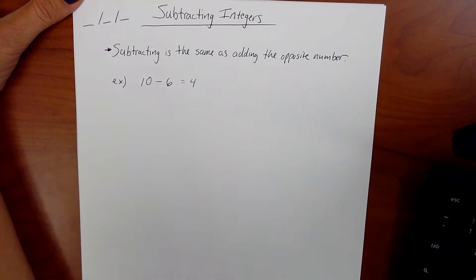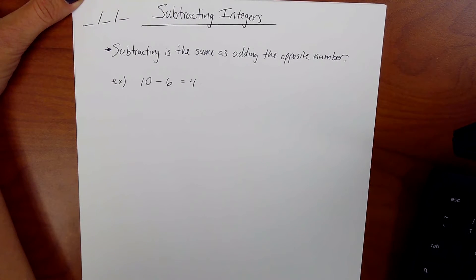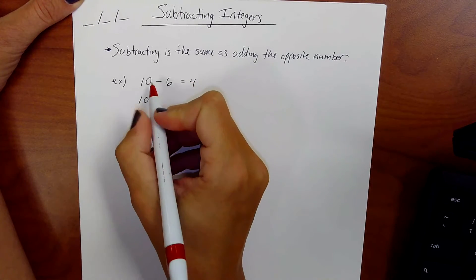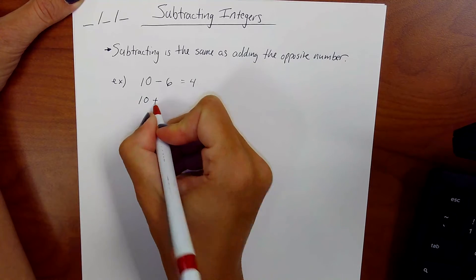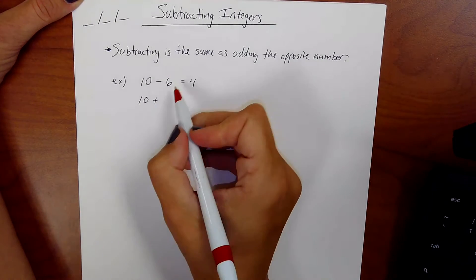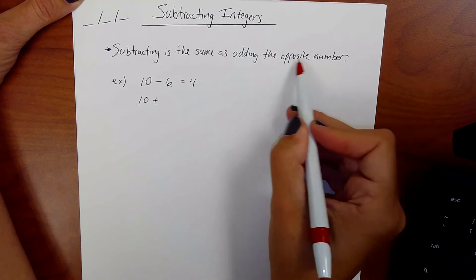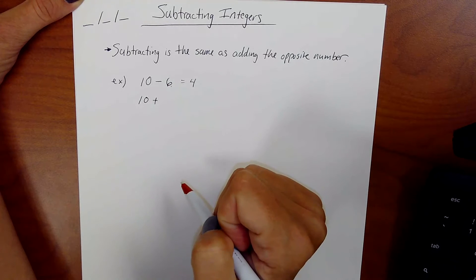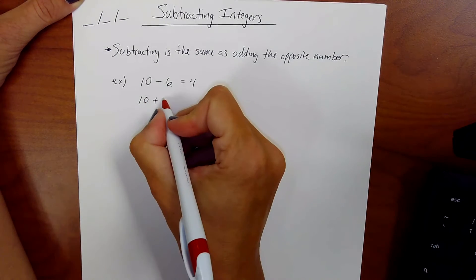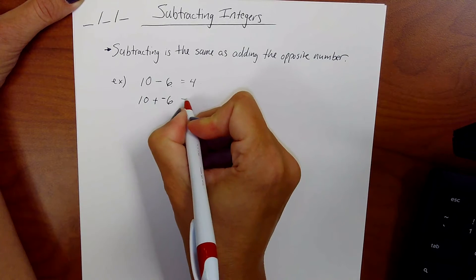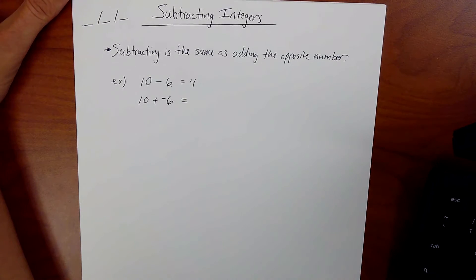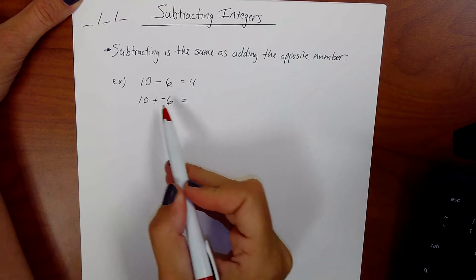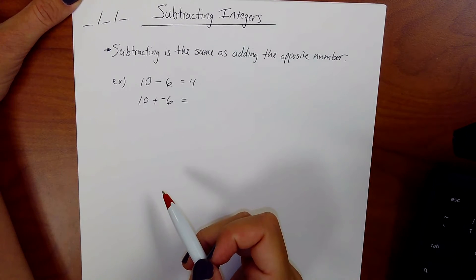If subtracting is the same as adding the opposite number, what we're going to do for any subtraction problem is we're going to change it to an addition problem and change the second number to the opposite of what it was. So this is 10 minus positive 6. We're going to change it to 10 plus a negative 6. Now this should keep the answer the same. Now this is adding integers.